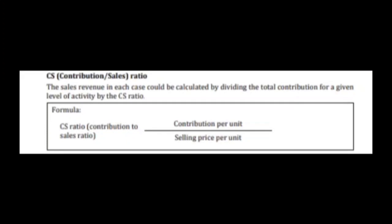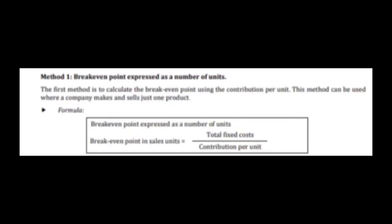Next is the break-even point expressed as number of units — this tells the company how many products to sell for no profit and no loss, equal to the total cost. To find this, the company divides total fixed cost by contribution per unit. Contribution means sales minus variable cost.